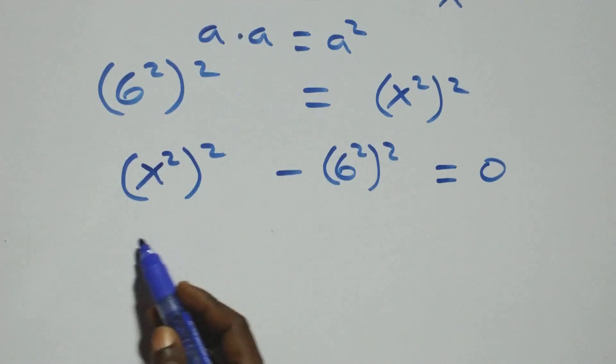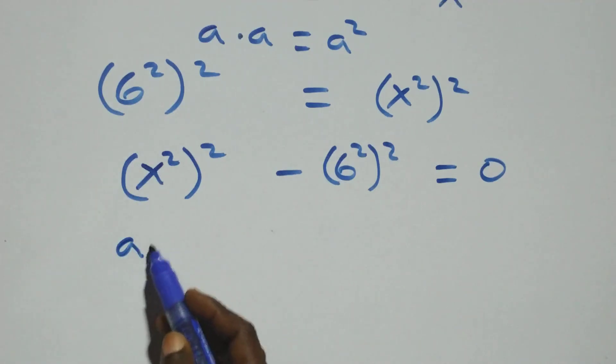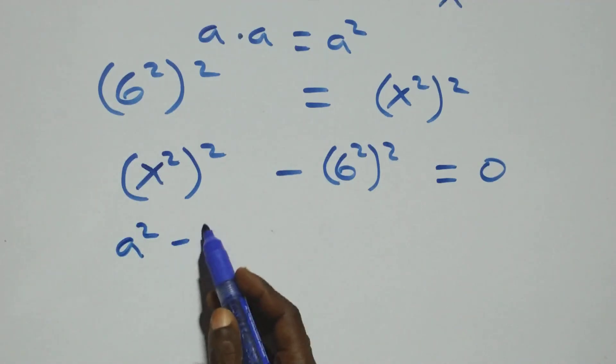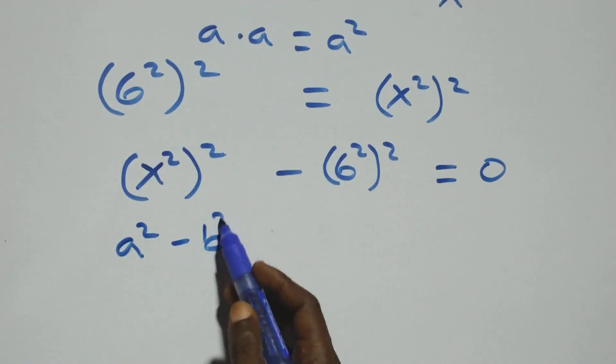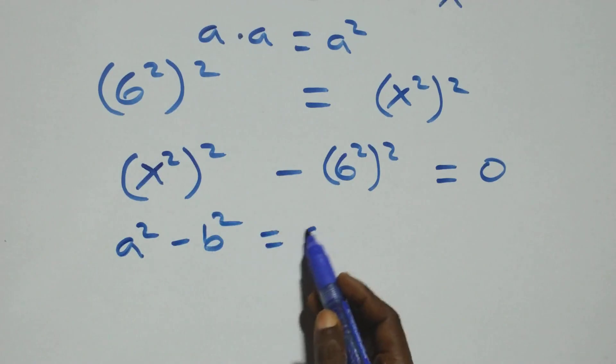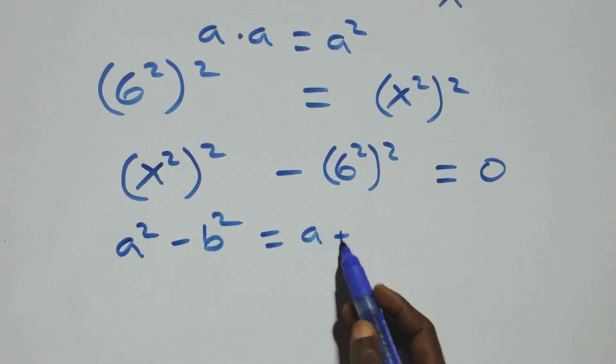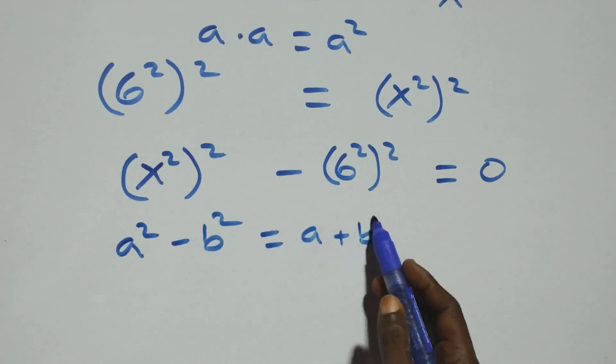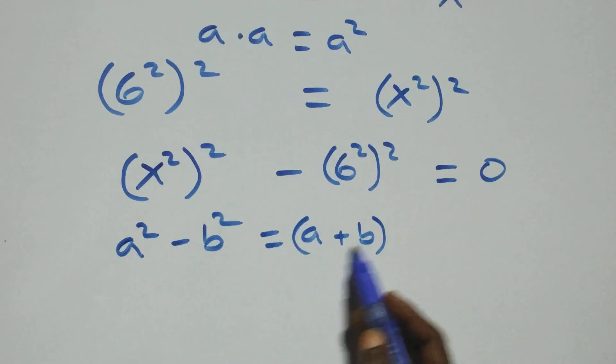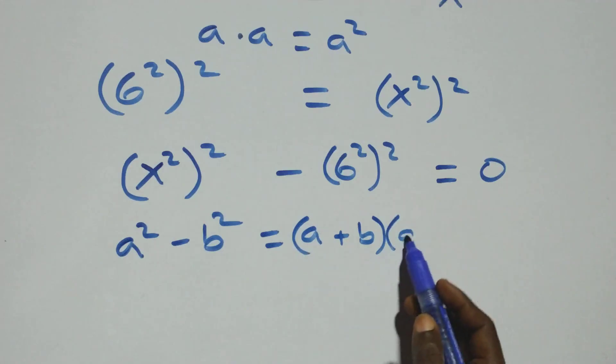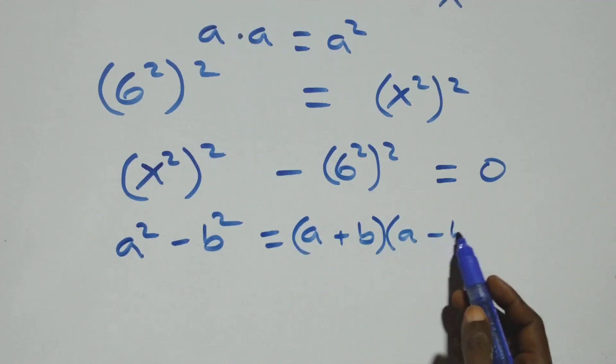This follows from the identity a squared minus b squared, which is the same thing as (a + b)(a − b).